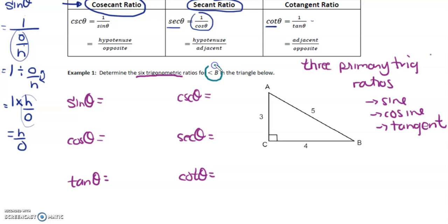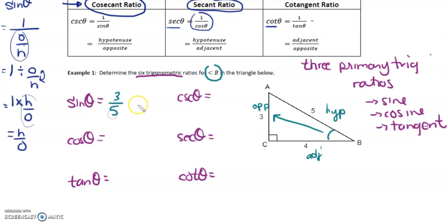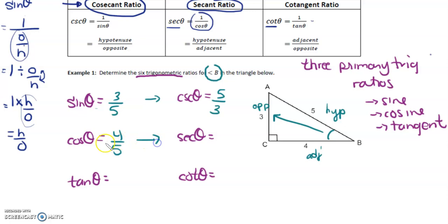We're referencing angle B in this triangle. For angle B, three is the opposite, four is the adjacent, and five is the hypotenuse. For sine, we have three over five. For cosecant, we have five over three — just flip it. Going from sine to cosecant, we just flip the ratio. For cosine, we have four over five, so for its reciprocal, secant, we have five over four. For tangent, we have three over four, so for its reciprocal cotangent, we have four over three.